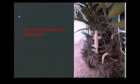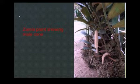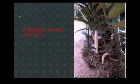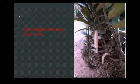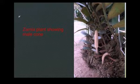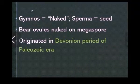This is Zamia, belonging to gymnosperms. The white colored structure you see here is the male cone of Zamia. Zamia is usually taken as an ornamental plant among gymnosperms, and Zamia pygmaea is the smallest species among gymnosperms.